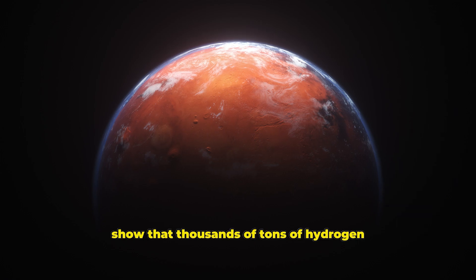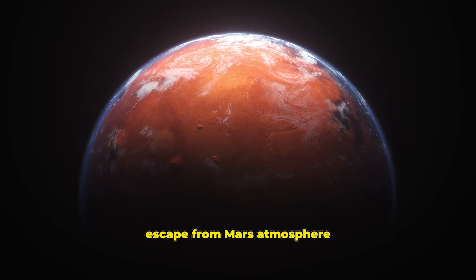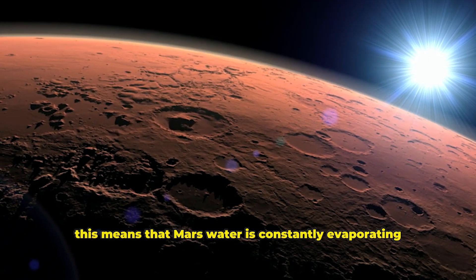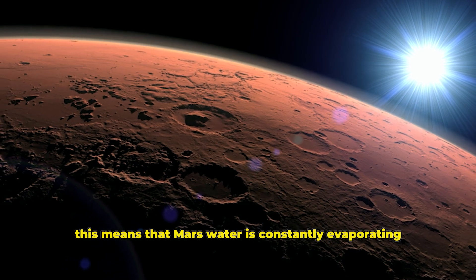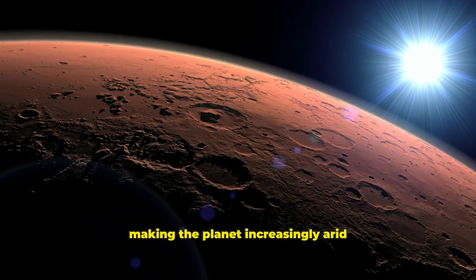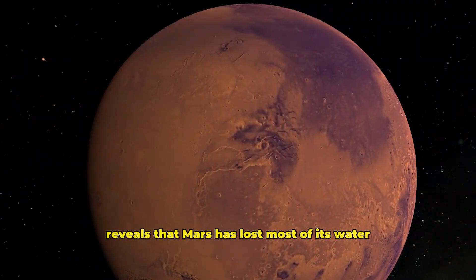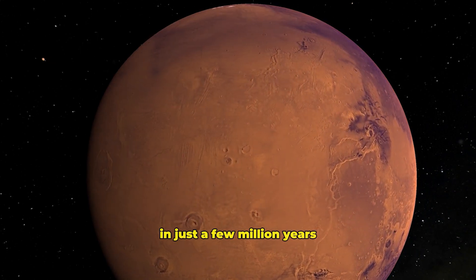MAVEN's findings show that thousands of tons of hydrogen escape from Mars' atmosphere every second. This means that Mars' water is constantly evaporating, making the planet increasingly arid. This discovery reveals that Mars has lost most of its water in just a few million years.